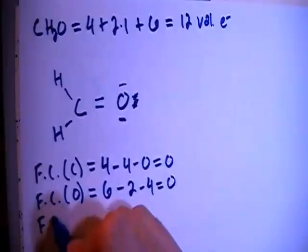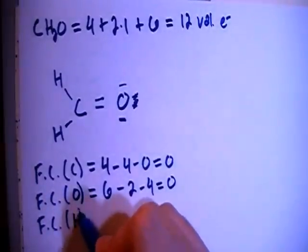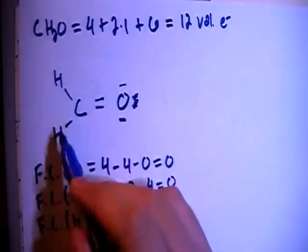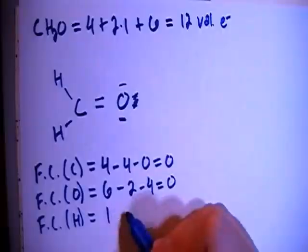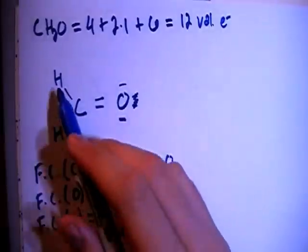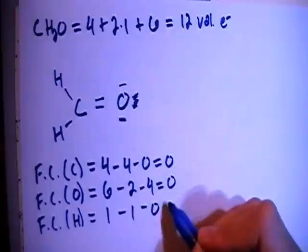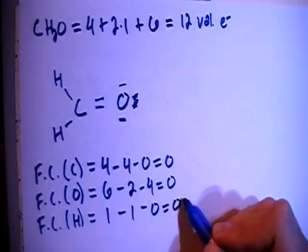And now the formal charge on the hydrogens, and notice that they're both the same setup. So there's 1 electron brought in, minus 1 bond for each one, minus 0 non-bonding electrons for a formal charge of 0,